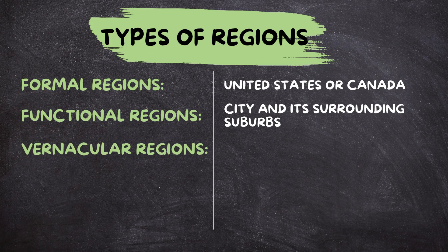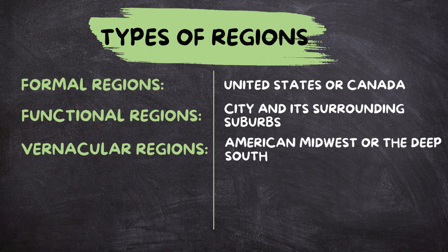Vernacular regions, also known as perceptual regions, are regions that exist in the minds of people based on their perceptions and experiences. Vernacular regions are not officially defined, but are rather perceived based on cultural or regional identities. For instance, the American Midwest or the Deep South are examples of vernacular regions that people recognize based on shared cultural traits and perceptions.